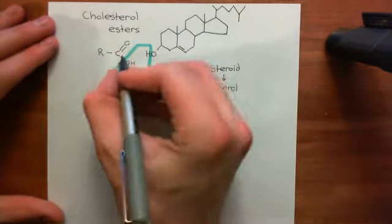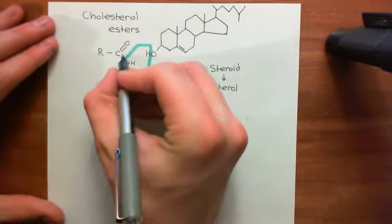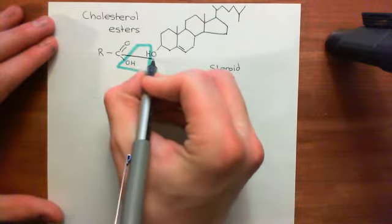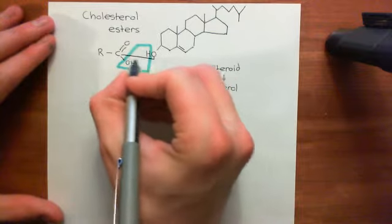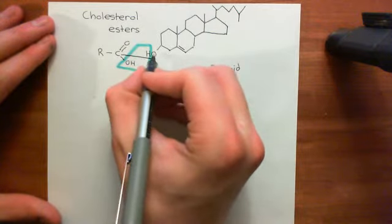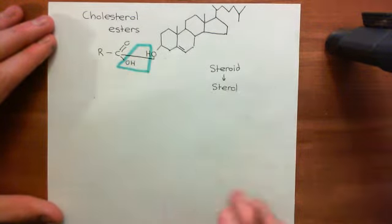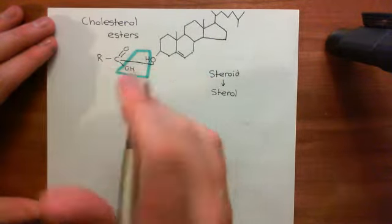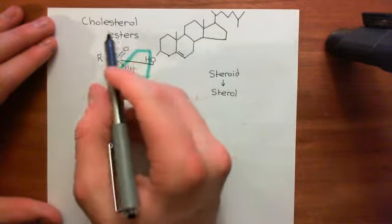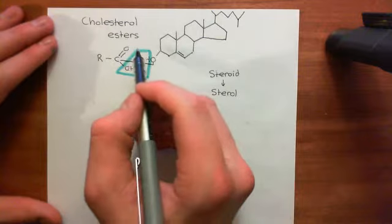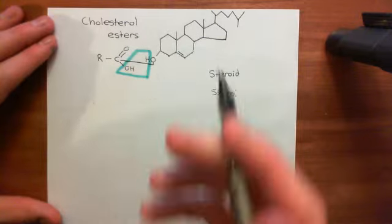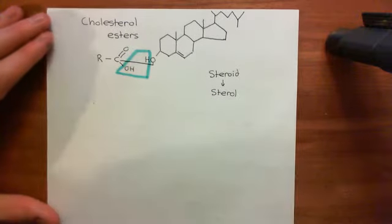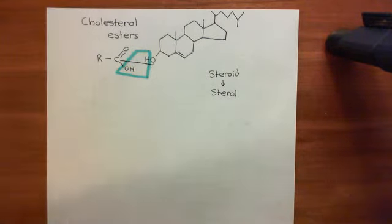You'll take the alcohol group off the carboxylic acid group, then bind the carbon of the carboxylic acid molecule to the oxygen of the alcohol group of the cholesterol molecule, and that will create what is called a cholesterol ester. So that's what is meant by cholesterol ester.